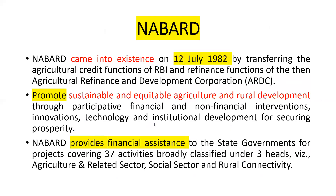NABARD — National Agriculture Bank for Rural Development — was formed in 1982 by transferring the agriculture credit function of RBI and the refinance function of Agriculture Finance and Development Corporation (ARDC). Its main focus is sustainable and equitable agriculture and rural development through participative financial and non-financial interventions, innovation, technology, and institutional development. NABARD generally provides financial assistance to state governments for projects covering 37 activities broadly classified under agriculture and related sectors, social sector, and rural connectivity.